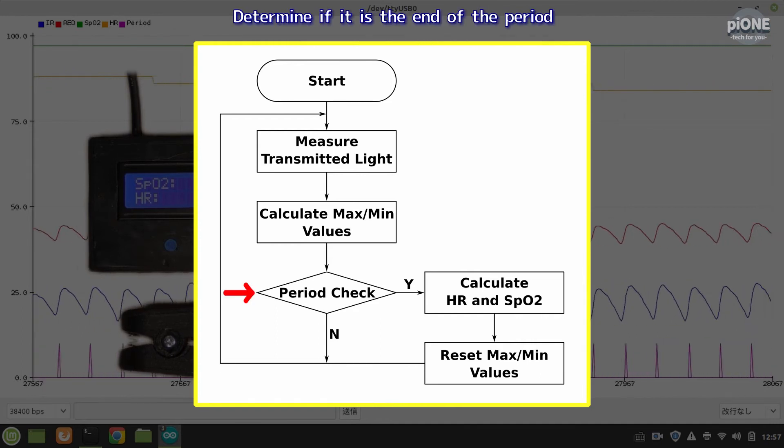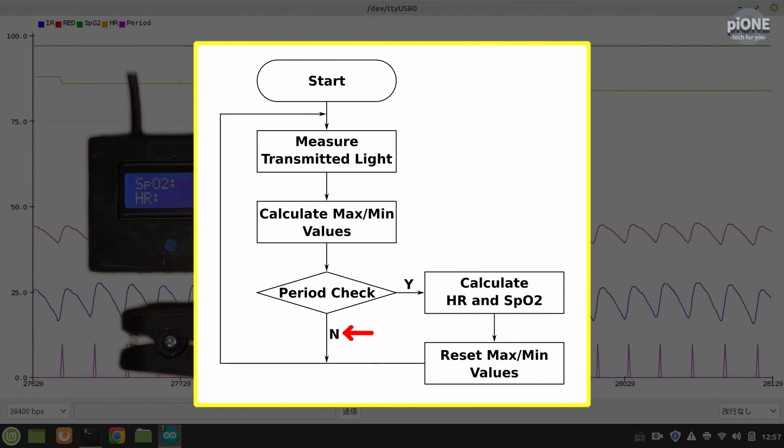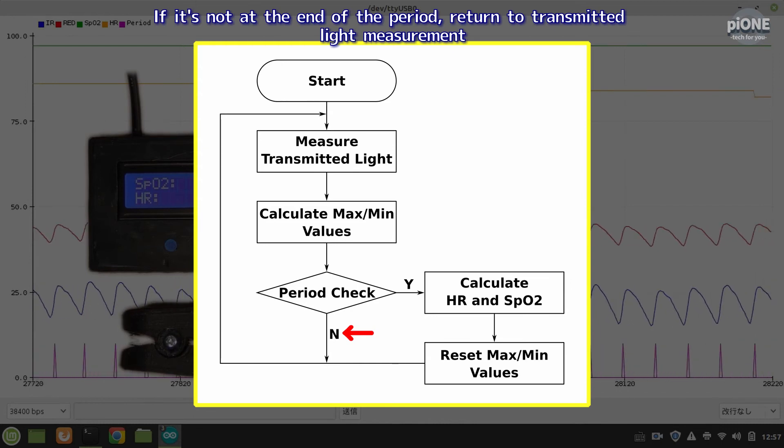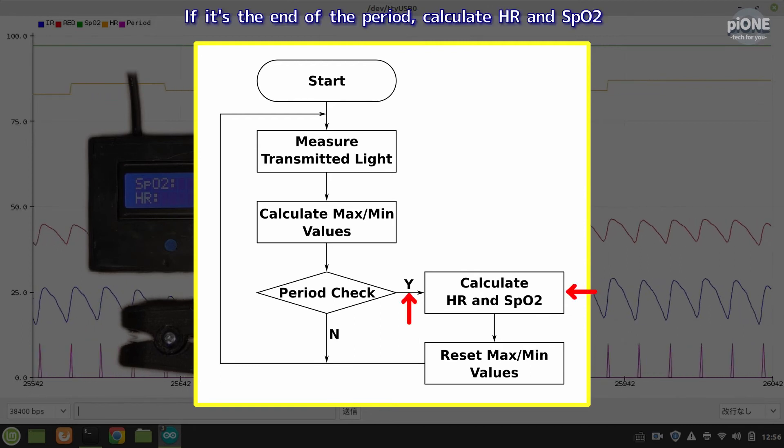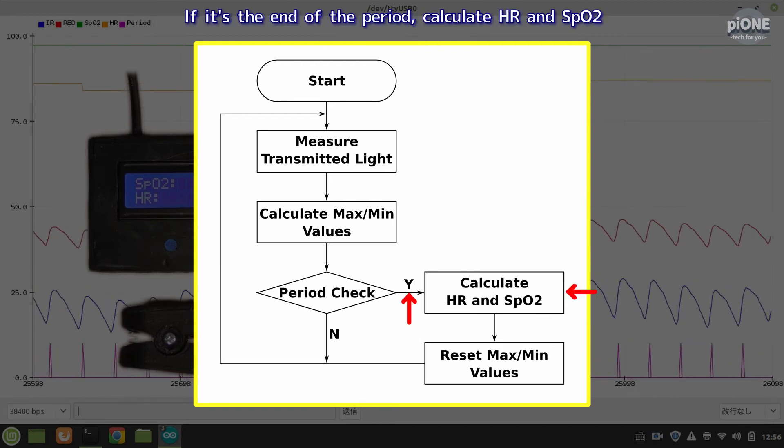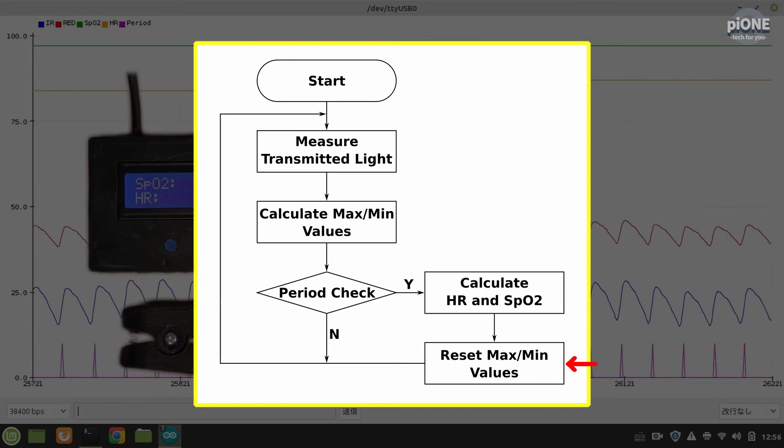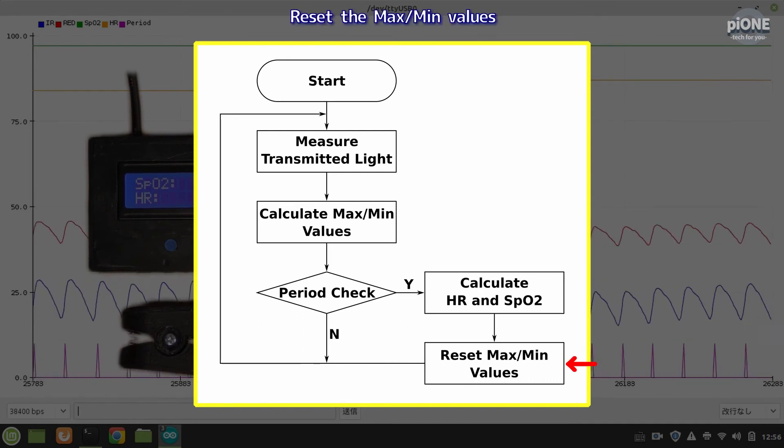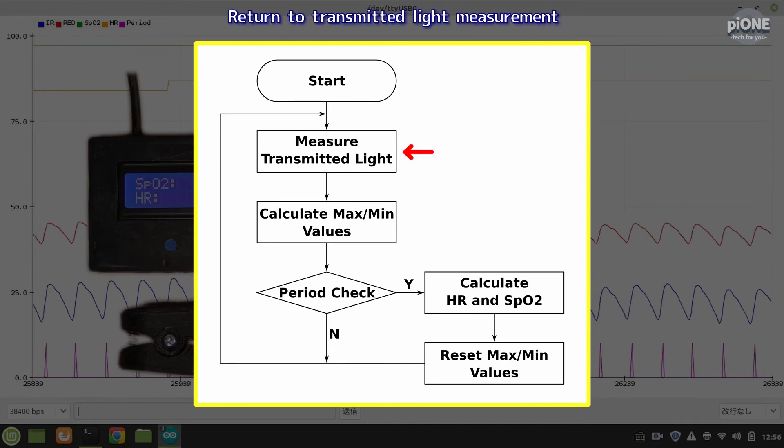Determine if it is the end of the period. If it's not at the end of the period, return to transmitted light measurement. If it's the end of the period, calculate HR and SPO2. Reset the max per minute values. Return to transmitted light measurement.